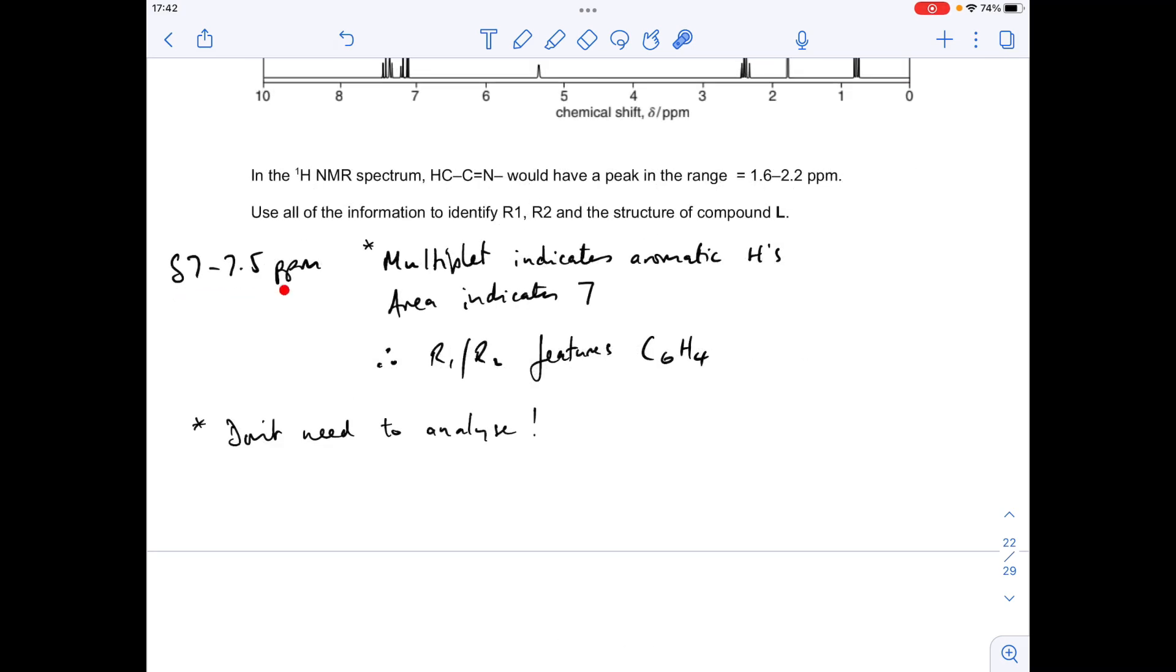So we're saying between 7 to 7.5 ppm we've got a multiplet, so we've got aromatic protons. The area indicates 7 of them. Just a reminder there that we don't need to analyze aromatic splitting patterns. That's clearly stated, certainly in the OCR syllabus. And so therefore, what can we say from that? Well, because we've got that benzene ring with 3 hydrogens on in the part of the structure that we do know about, R1 or R2 must feature another benzene ring with 4 hydrogens on.